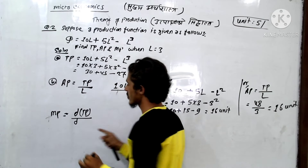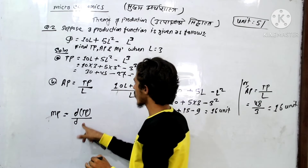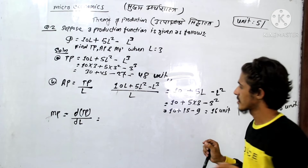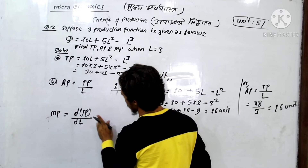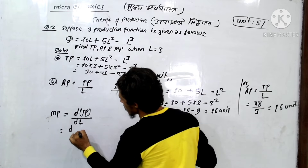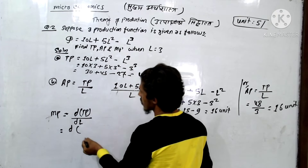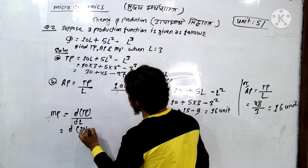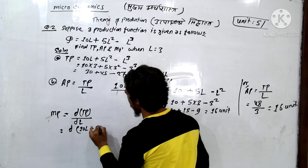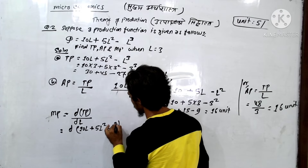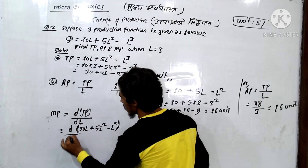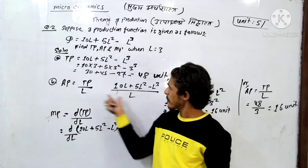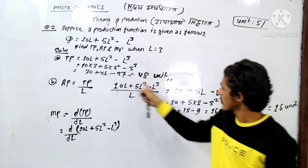MP equals delta TP divided by delta L, which is the derivative of TP with respect to L. So MP equals d/dL of (10L plus 5L squared minus L cubed). AP is easy to find: divide each TP value by L.